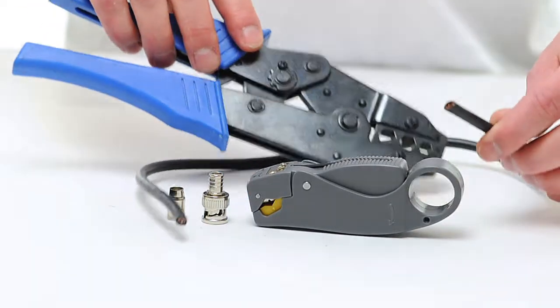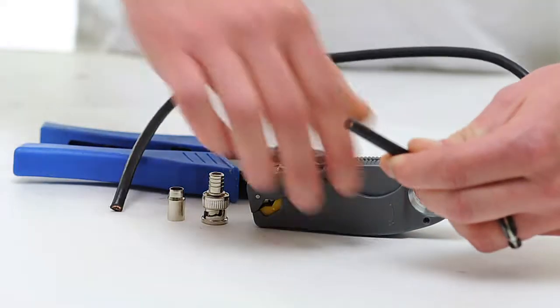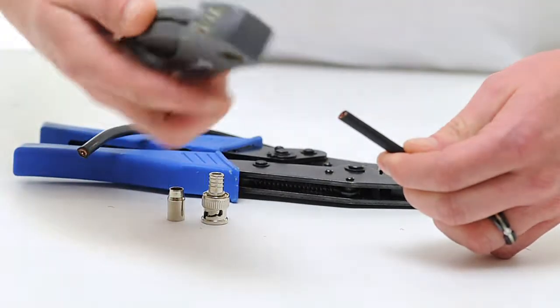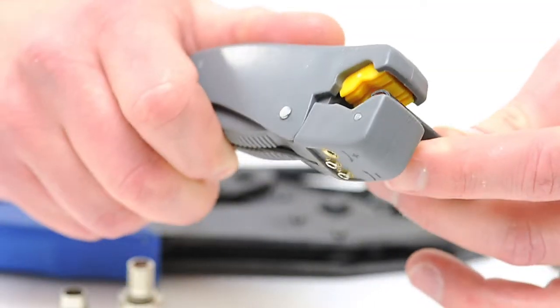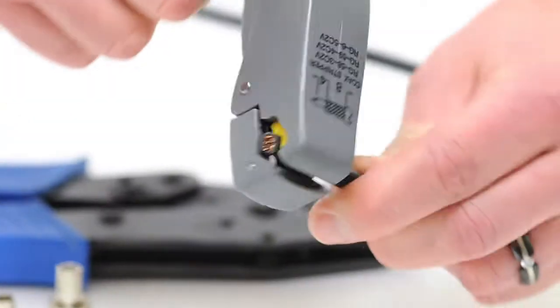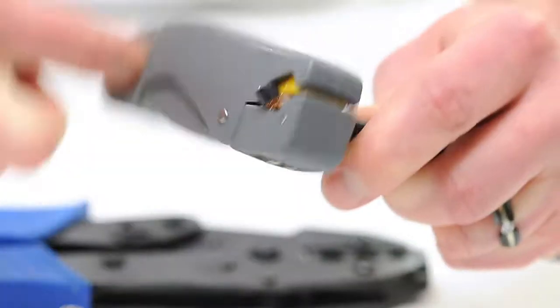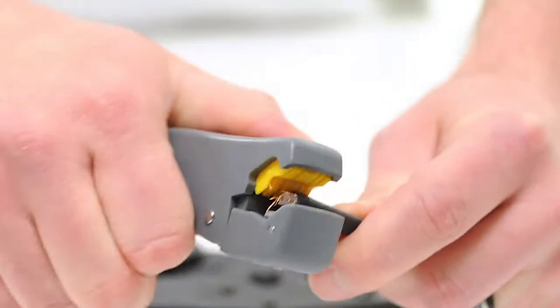To begin, take your coax stripper and remove the outer jacket and dielectric of the cable. The advantage of using a coax stripping tool is that it cuts both the outer jacket and dielectric at the same time. Rotate the tool a few times around the outside of the cable and peel the jacket off.